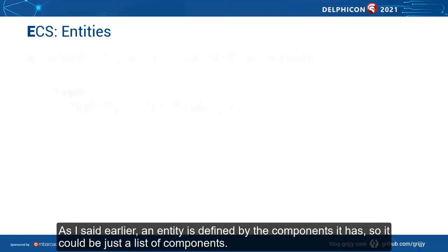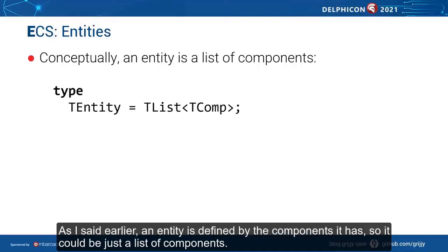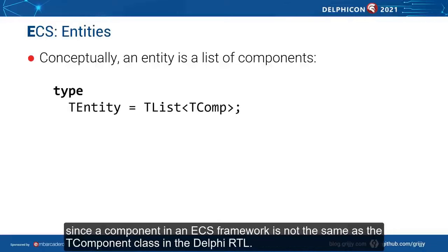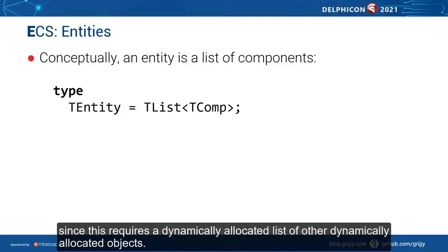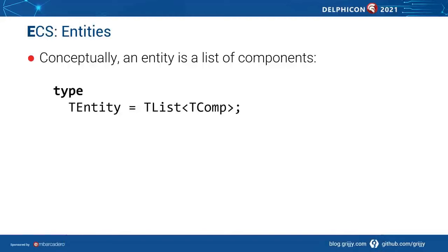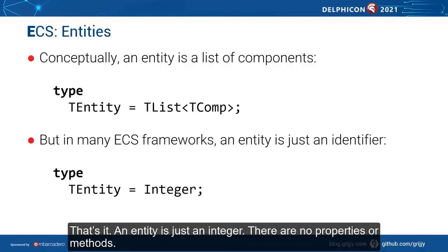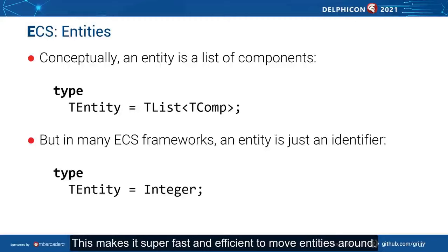So, what exactly are entities, components and systems? As I said earlier, an entity is defined by the components it has — so it could be just a list of components. In this sample type declaration, TComp is some base class for components. Note that I don't use the name TComponent here, since a component in an ECS framework is not the same as the TComponent class in the Delphi RTL. From a performance standpoint, this is not an ideal solution, since it requires a dynamically allocated list of other dynamically allocated objects. In fact, in many ECS frameworks, an entity is just an integer. There are no properties or methods, making it super fast and efficient to move entities around.